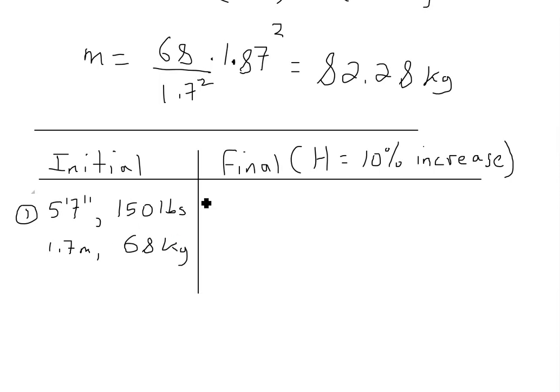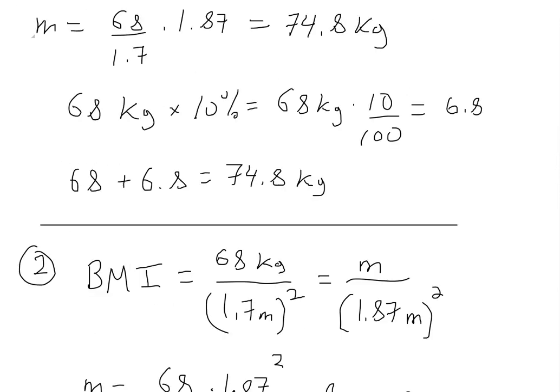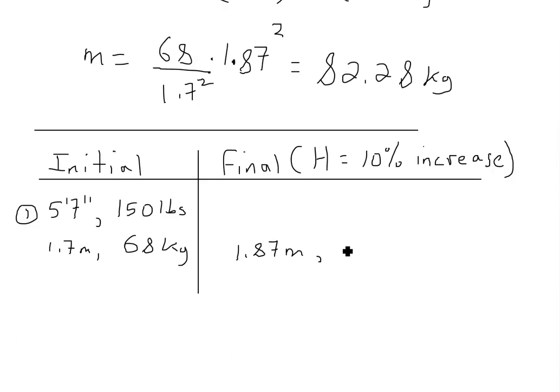And this one in metric units would be 1.7 meters. And this one would just be 68 kilograms. So then with 10% increase, this is using direct proportion. We would get up to 1.87 meters in height. And this correlates to 74.8 kilograms.